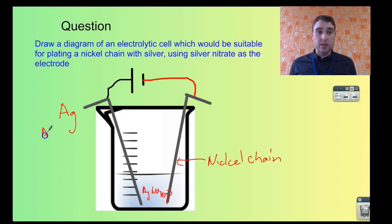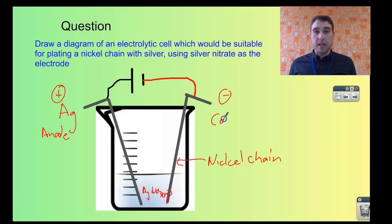We're going to label some things. This is going to be our anode over here. The anode is going to be positive in this case. Over here, the nickel chain is going to be negative. It's going to be the cathode.